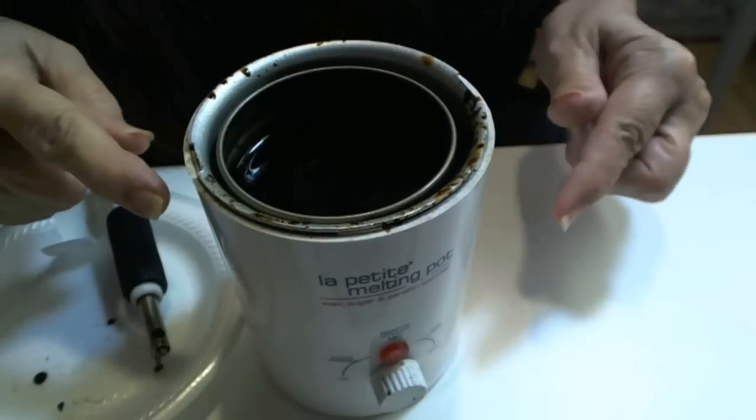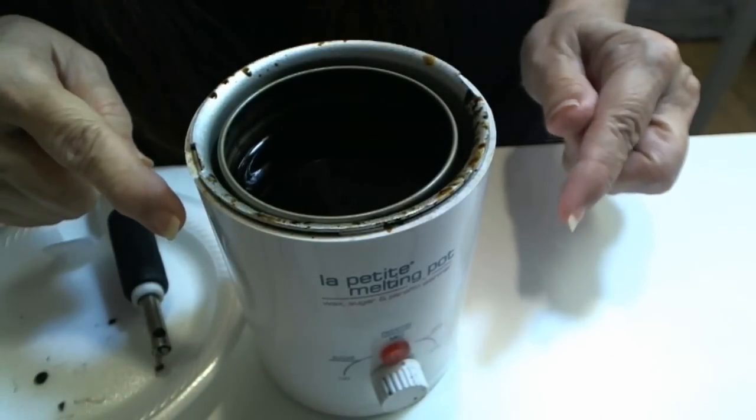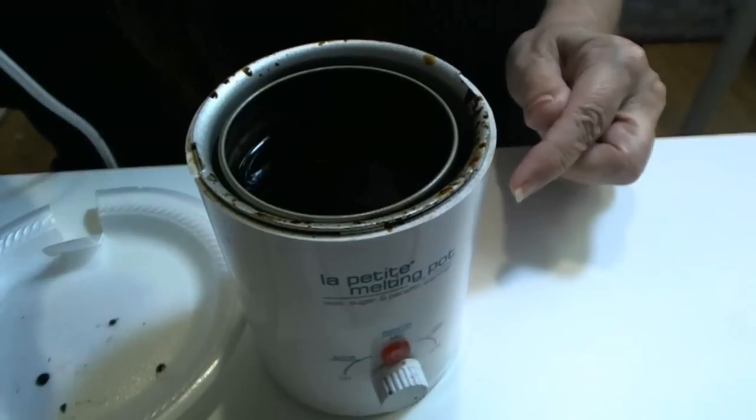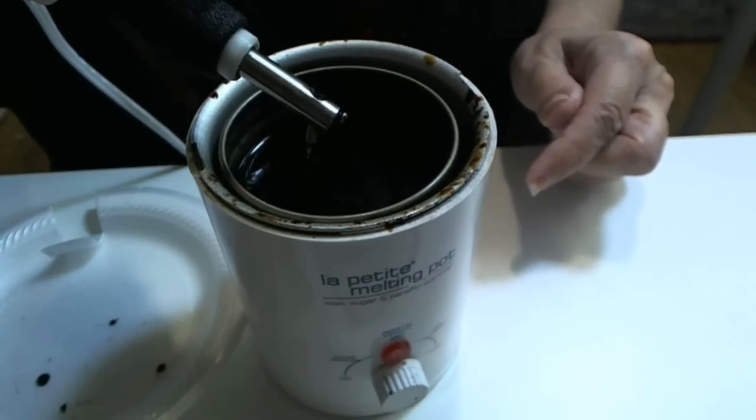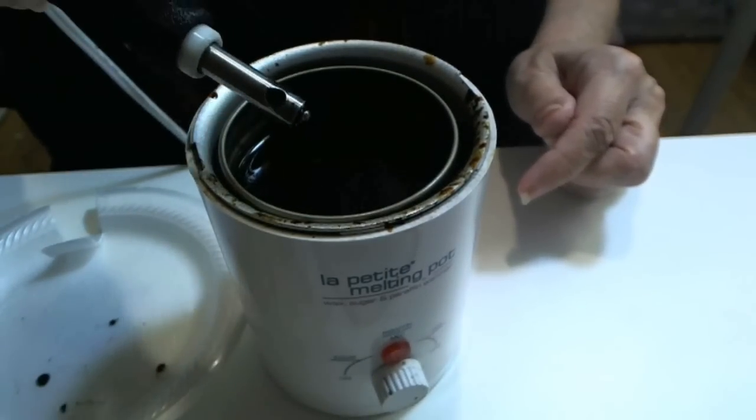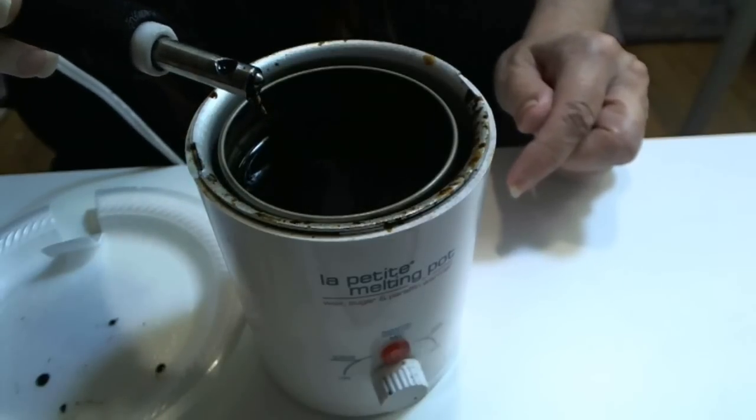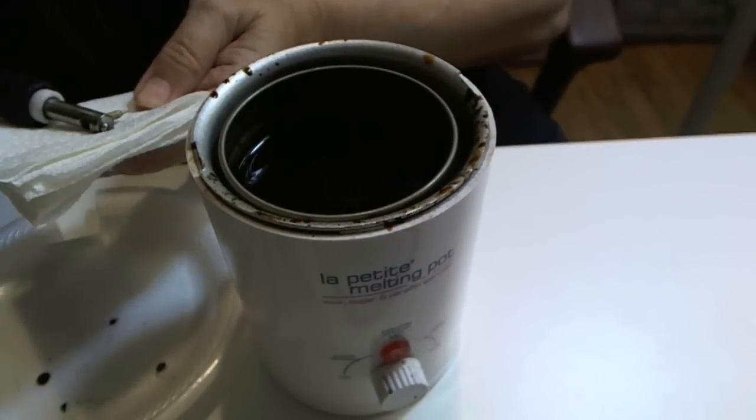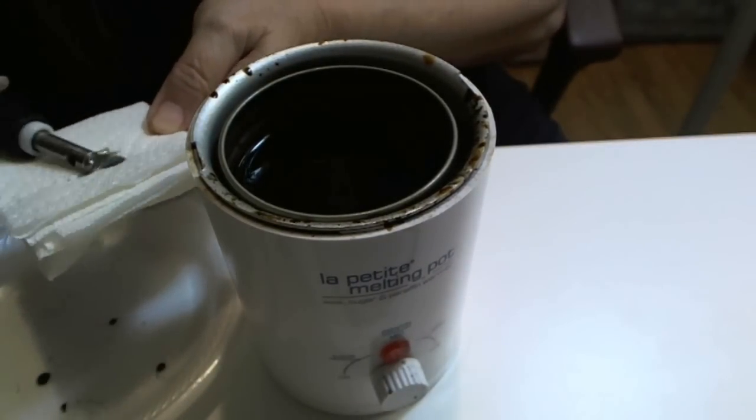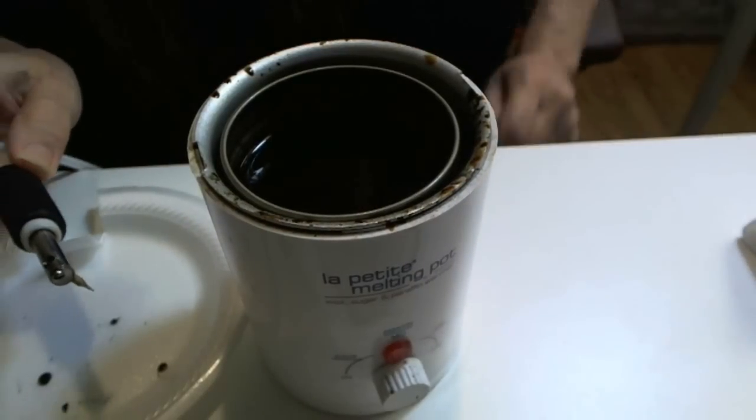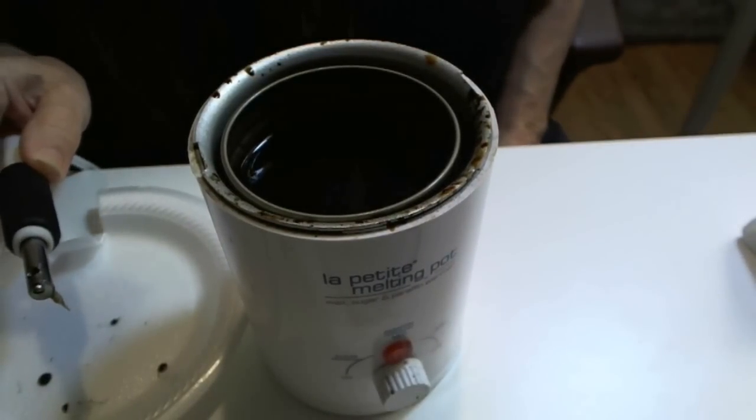This is my La Petite melting pot. This is how I melt my wax. When I'm working on my eggs, I will just take the tip of my kiska and dip it into the melted wax. I will always wipe off just the outside, and now it's time to begin on my egg.